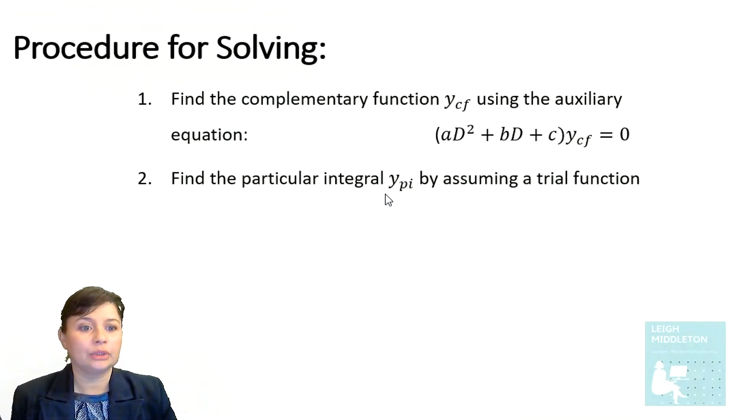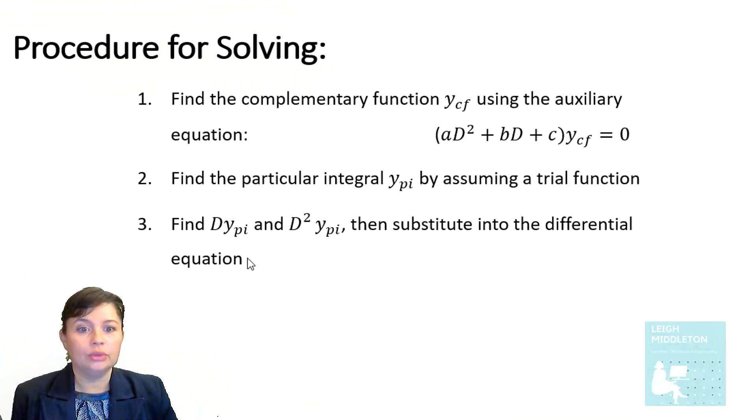Then we find the particular integral by assuming some kind of a trial function, and the trial function is informed by what the form of F(x) is. You then find your first derivative, and then your second derivative of your particular integral, and then substitute back into the differential equation. You are then going to find what the constant values are within that particular integral. And this method is called the method of undetermined coefficients.